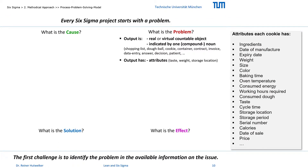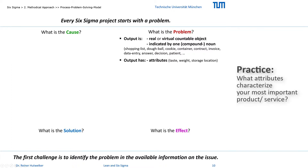Just imagine that all outputs carry a label with all their characteristic attributes — like a label on food packages, but more detailed — which indicate, for example, ingredients, date of manufacture, expiry date, weight, size, color, baking time, oven temperature, consumed energy, working hours required and so on. Every product and every service could have such a label with all its attributes. What attributes would appear on the imaginary label of one of your outputs? This is not always as easy as with cookies, but it is important and useful to think in terms of attributes.